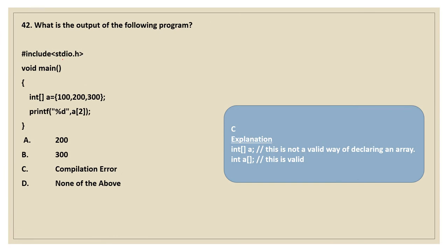What is the output of the following program? hash include stdio.h, void main, open curly, int array a equal to 100, 200, 300. Print the second element of the array. Here you have to note one thing: the subscript, that is the square bracket, is placed before the variable name, which is invalid in C. So the result of the code is going to be a compilation error. The valid declaration of an array is int a followed by the square bracket — that only is the correct declaration. So it is a compilation error.